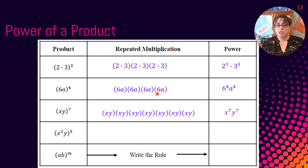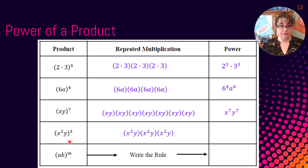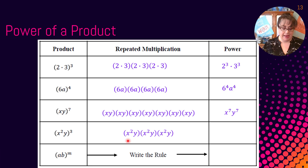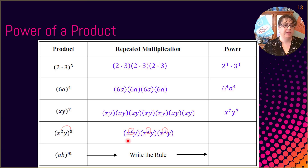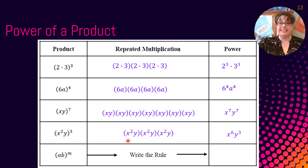This next one does a great job of illustrating what's happening. It's the product of x squared times y, to the third power. So we write out x squared y three different times. How many x's do we have? You're going to multiply 2 times 3, which is 6. That's the same as adding 2 plus 2 plus 2. And there's a 1 right here with the y, so 1 times 3. Our final answer is x to the sixth, y cubed.